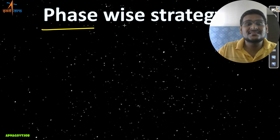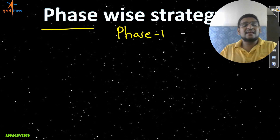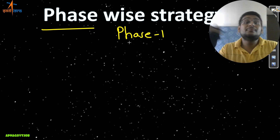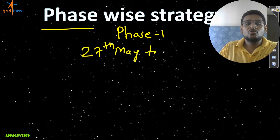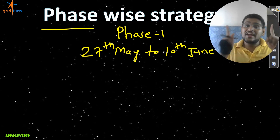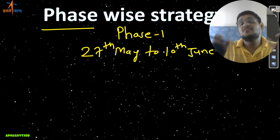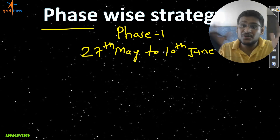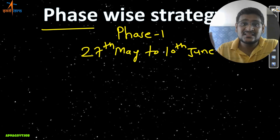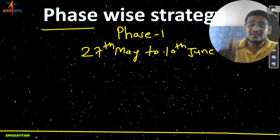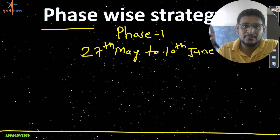Now we are starting Phase 1, which is common for all branches. The period of Phase 1 is from 27th May to 10th June. In this period, I will discuss how many subjects and which subjects you need to cover — branch-wise. You can see the timestamps: based on your branch, just click and watch that part.